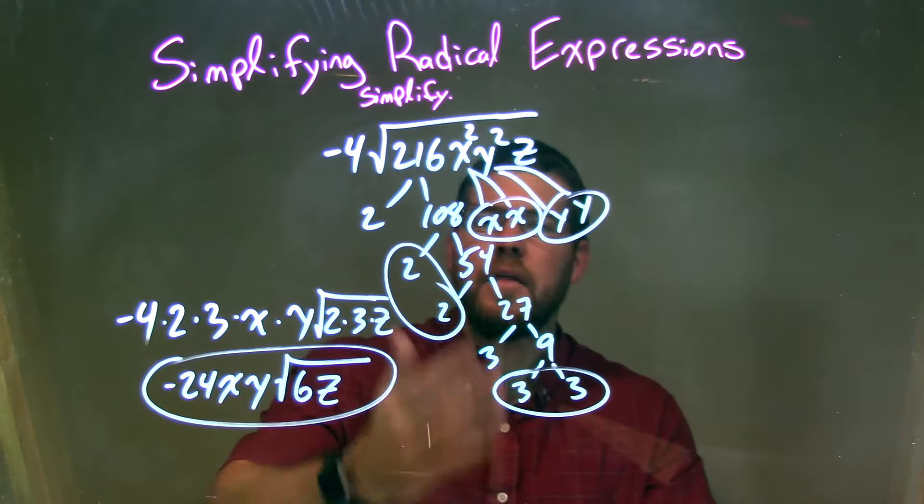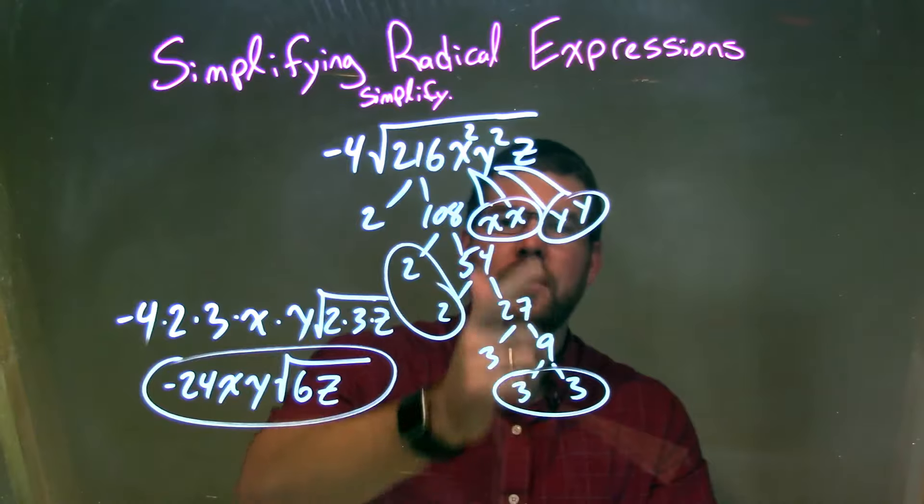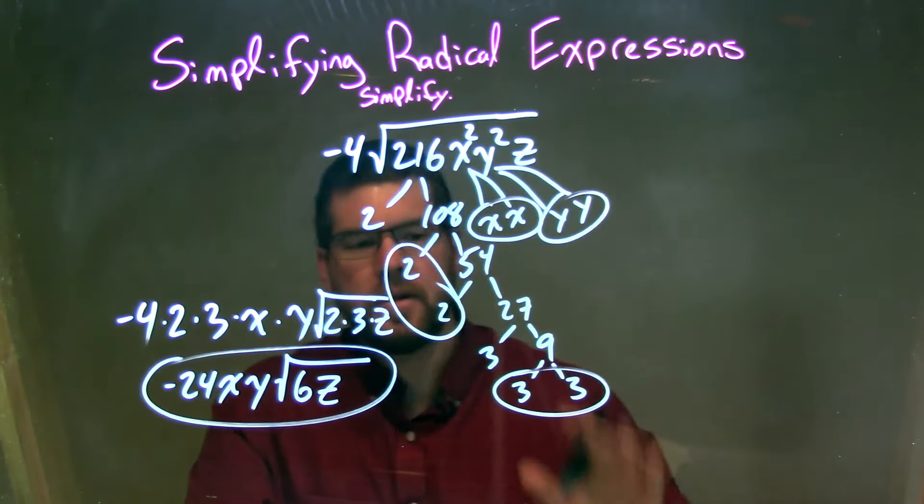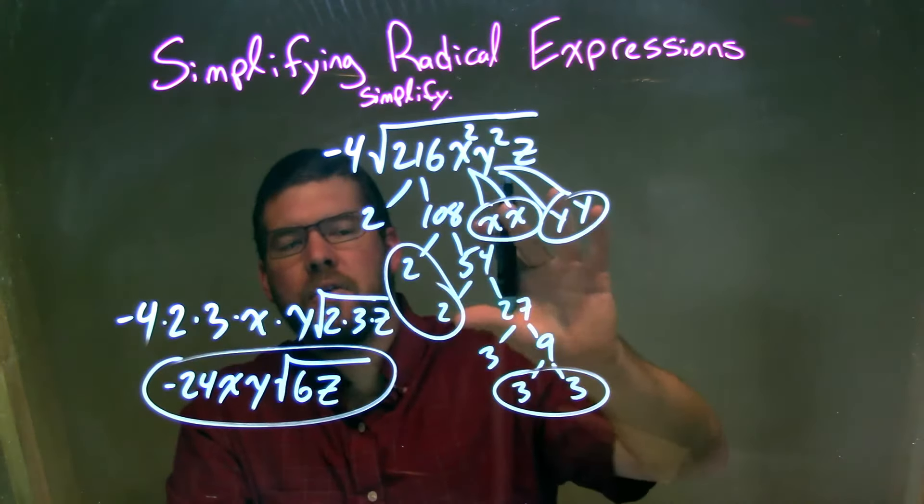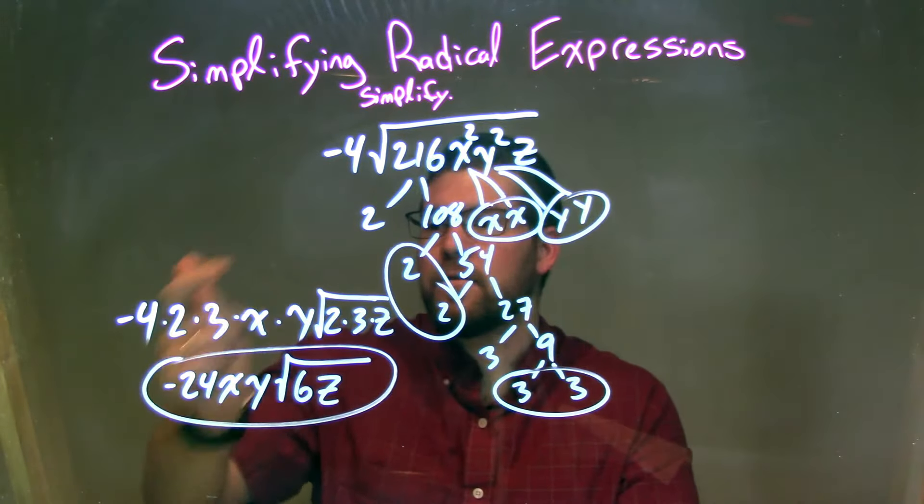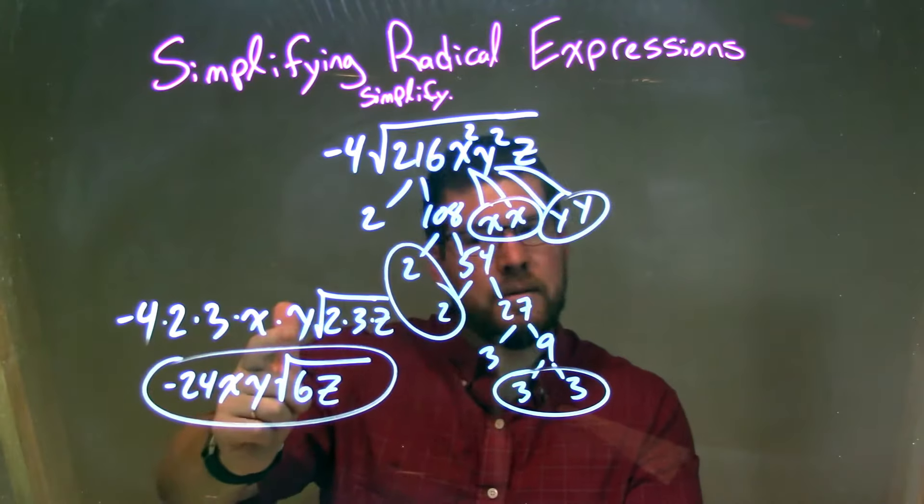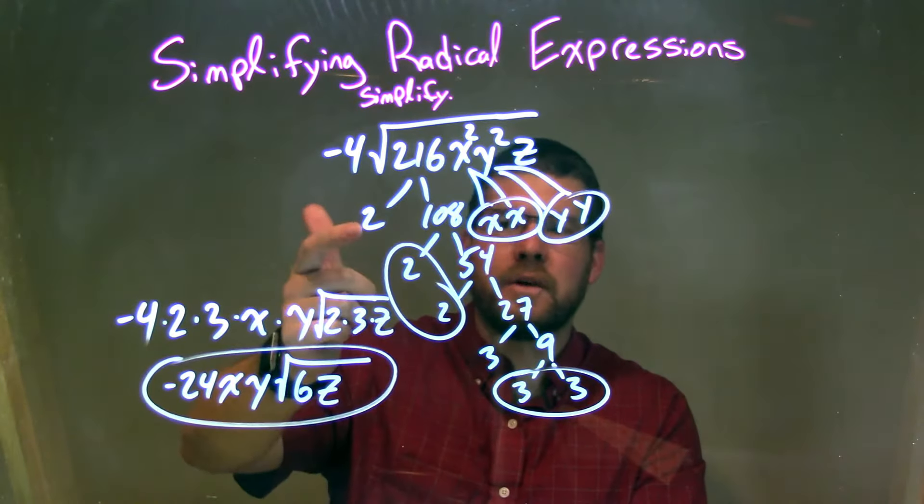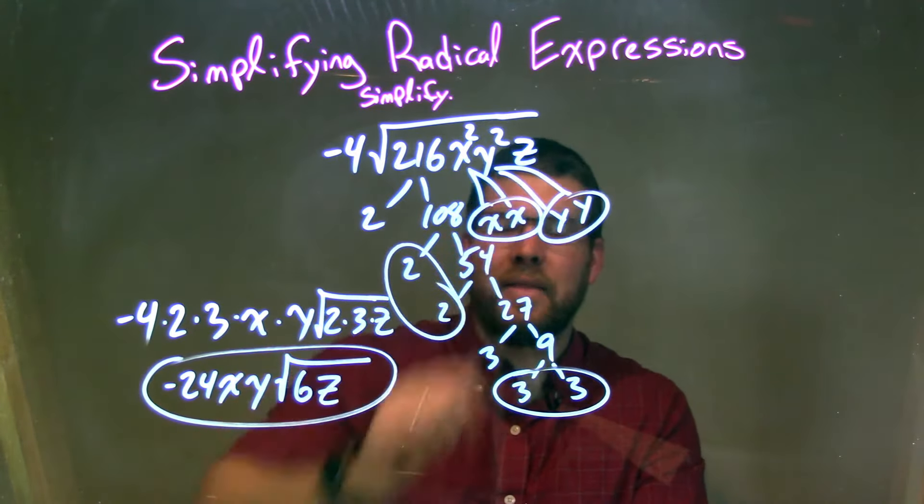Circle my pairs. Then, which are 2 2's, 2 3's, 2 x's, and 2 y's. The pairs are circled. And the paired ones are individuals on the outside of the square root. So we multiply them all out. Negative 4 times 2 times 3 times x times y. Times the square root of all the singles that were left. The 2, that 3, and that z.